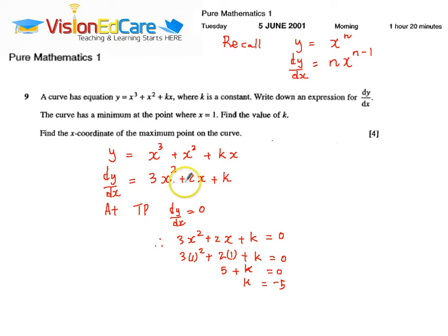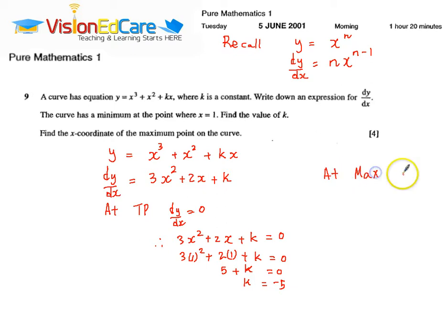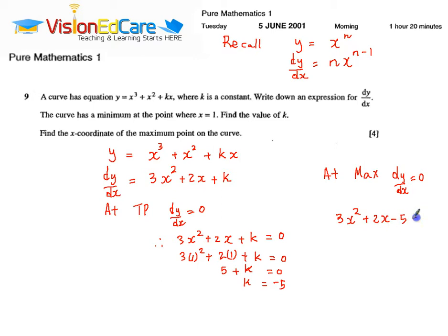So, we need to find the other. What we are going to do is solve this equation. At the maximum turning point, dy by dx equals 0 as well. So, at max, dy by dx equals 0. Therefore, we have 3x squared plus 2x minus 5 equals 0. All we have to do is solve this equation.